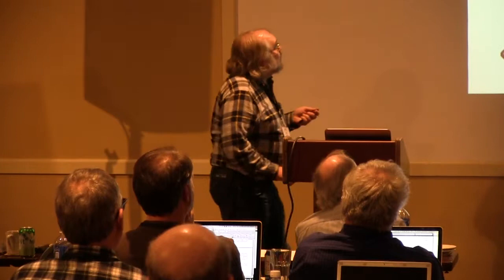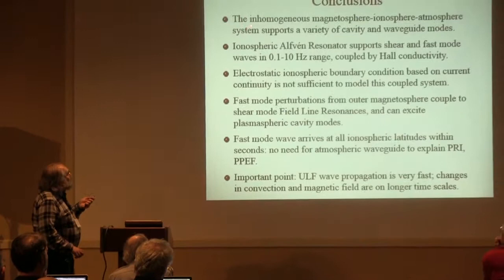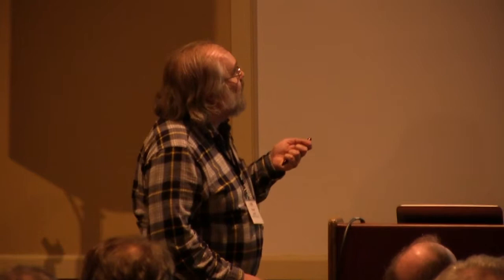Here are a few conclusions. The big bottom line is that this system is inhomogeneous — modes are all coupled. You can't really always talk about a pure shear Alfvén wave or a pure fast mode wave; certainly in some limits you have good approximations. There are all these different cavities and waveguides. The IAR is an important point. The electrostatic boundary condition is sometimes probably okay — certainly in a truly static case — but not all the time. Fast mode perturbations coupled to shear mode field line resonances is something that's been known for a long time, and these simulations are nice examples to illustrate that.